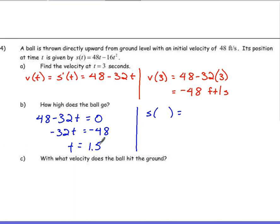1.5 is going to be what we plug into the original function to give us that height. So 1.5 goes into the original function, replacing t. We've got 48 times 1.5 minus 16 times 1.5 squared. What's that come out to be? What was it again? 36. So 36 feet high.